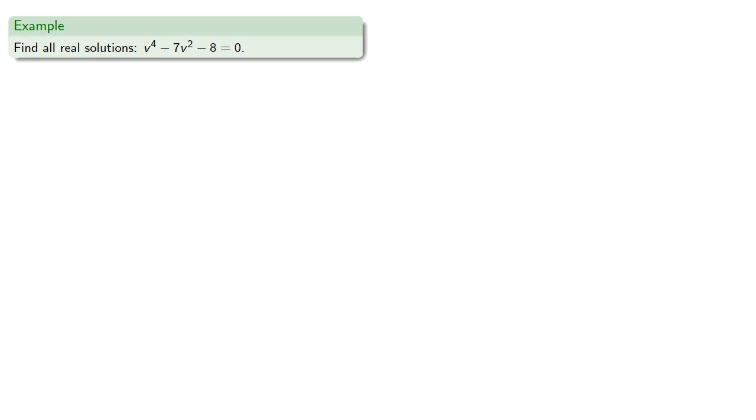The key here is recognizing when we can do a substitution that will give us a variable and the square of that variable. So in this equation, we might notice that v⁴ is the same as the square of v².